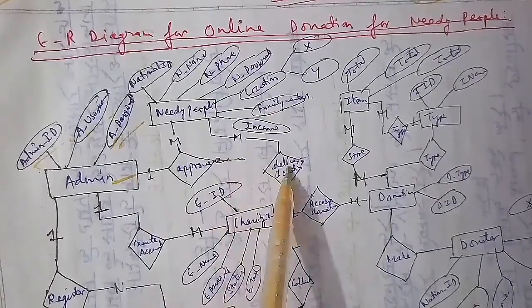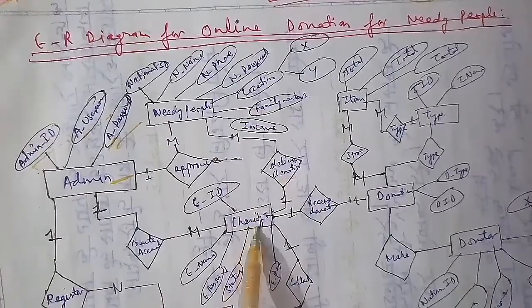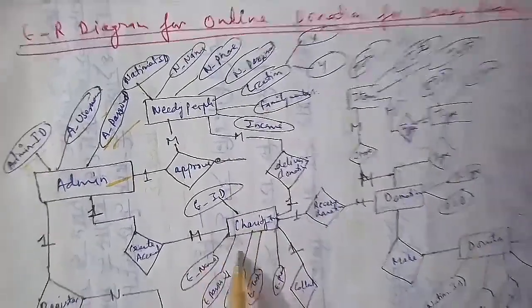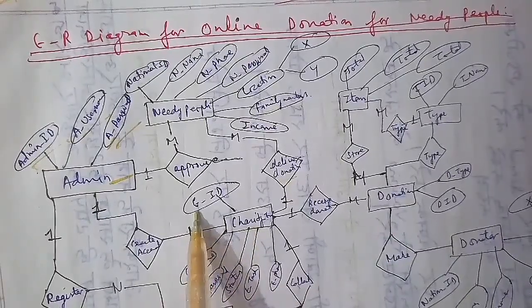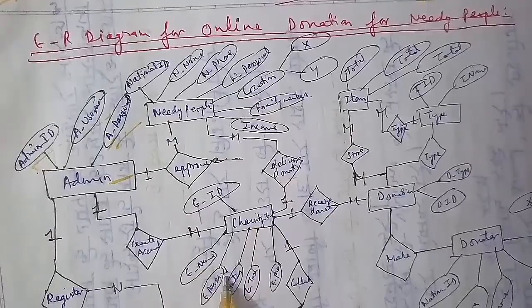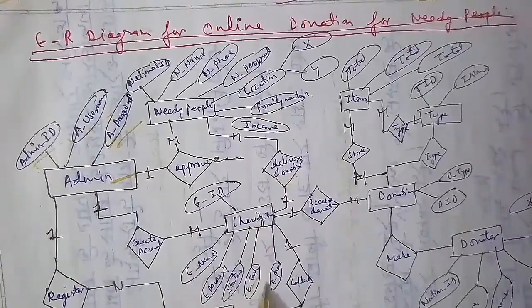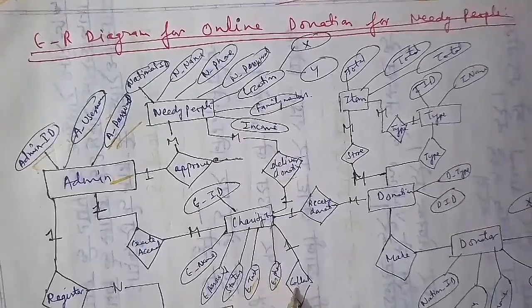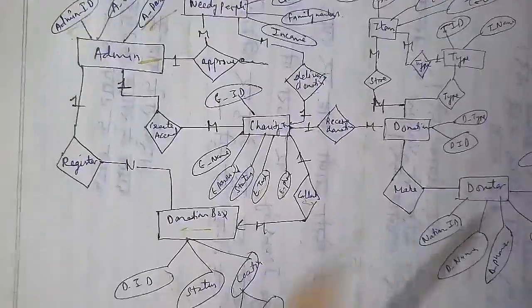The donation will be delivered to the needy people through the process of charity. The charity entity has attributes including the charity ID, name, password, status, and task. Employees can collect charity through the donation box. The charity is connected to the donation via a relation.